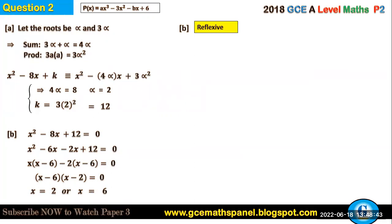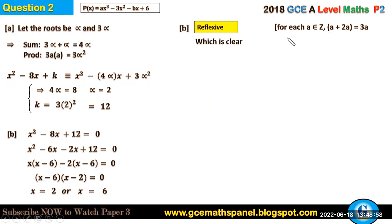For reflexivity: for each element a in ℤ, a can relate to itself. We have a + 2a = 3a, and 3 times any integer is a multiple of 3, so this is clearly divisible by 3, implying a relates a for each a ∈ ℤ. Therefore, the relation is reflexive.